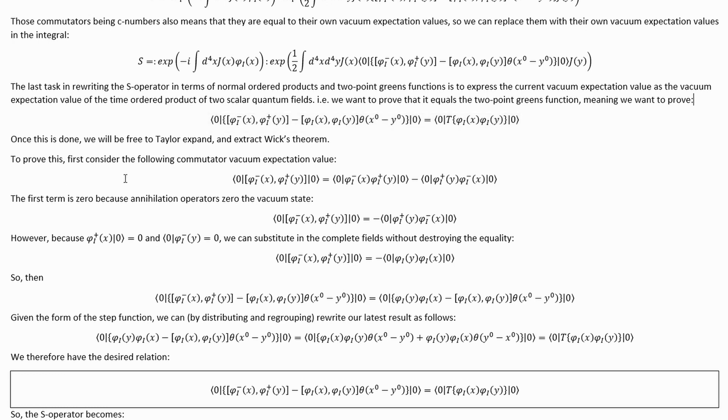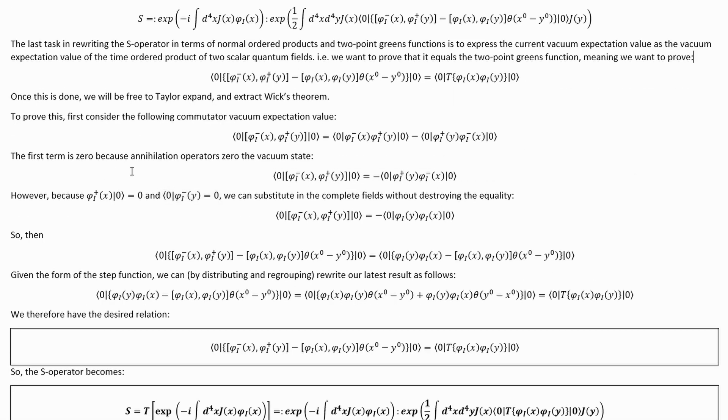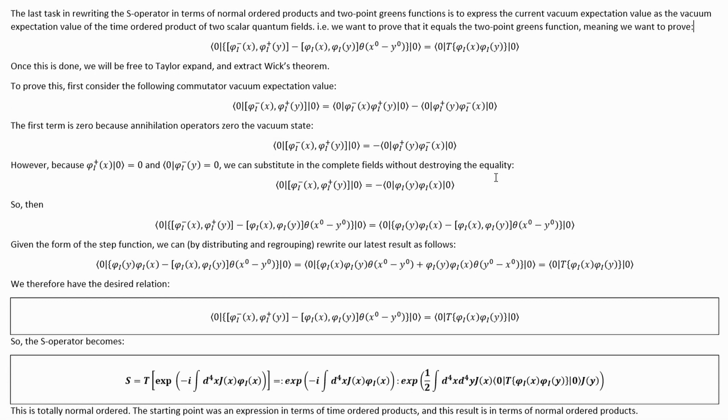To prove this relation, first consider the following commutator vacuum expectation value. If we start out with this and then simply write out the commutator and distribute the states, then we get to here. The first term is zero because annihilation operators zero the vacuum state, leaving us with this. However, because we have this relationship and this relationship, also because annihilation operators zero the vacuum state, we can substitute in the complete fields without destroying the equality into this term right there, leaving us with that relation.